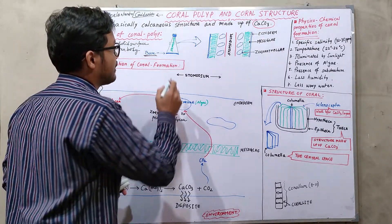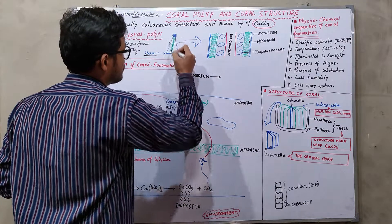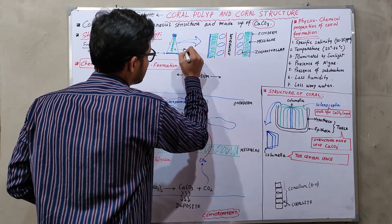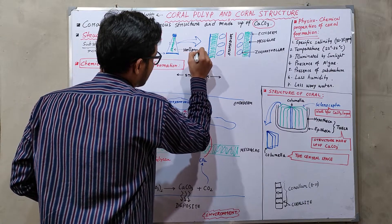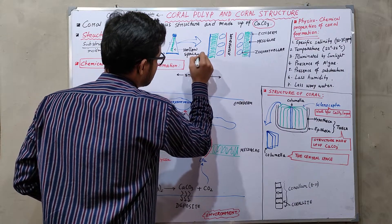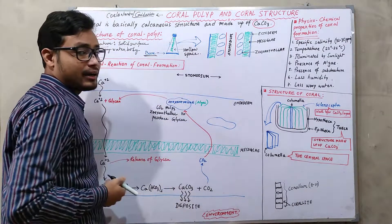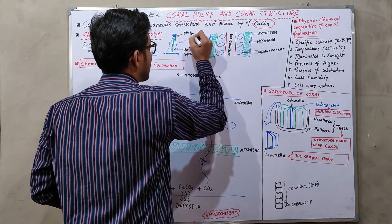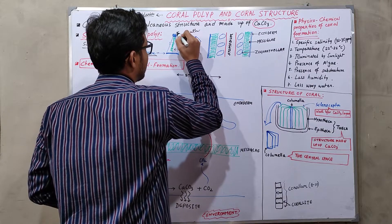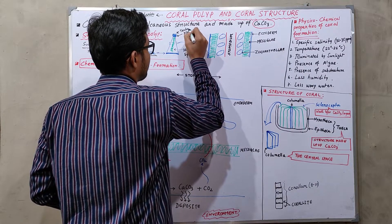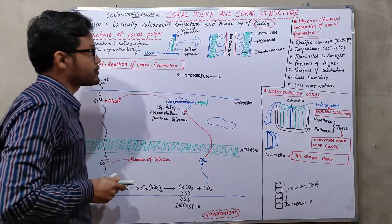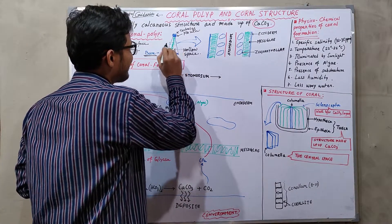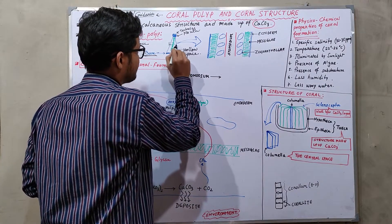The next structure is the stomodium. The stomodium is a hollow space inside that particular coral polyp. We also observe a mouth and tentacles. So these are the main structural components of coral polyps.